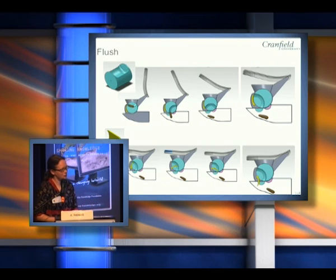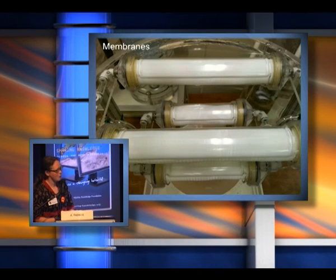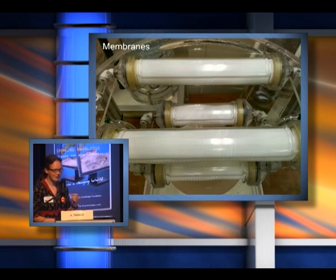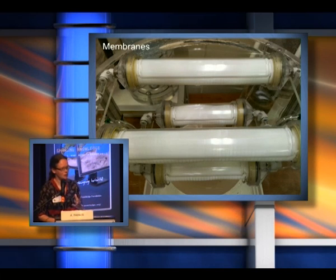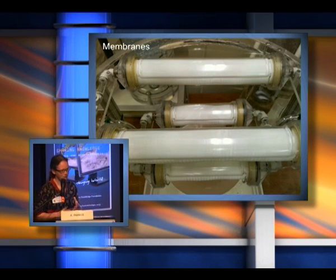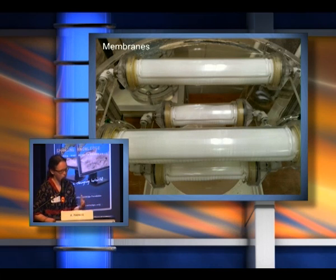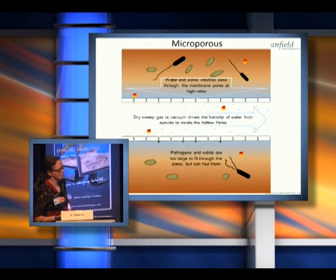The waste passes into the holding chamber, and the holding chamber contains the membrane bundle. This is what the membrane bundles look like in real life — they're hollow fiber membranes, basically like straws. You put a sweep gas or vacuum pressure through the middle of the membranes, and water can pass through them. Water is actually the smallest molecule in waste water. So the membranes have very small holes — or no holes at all — so that only the water can pass out of the waste.